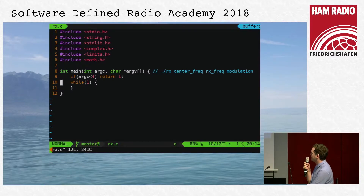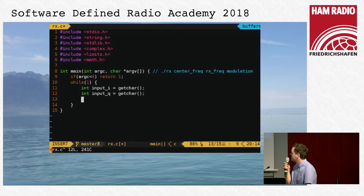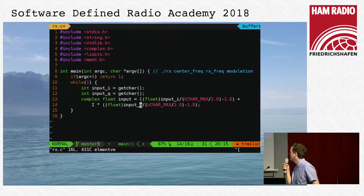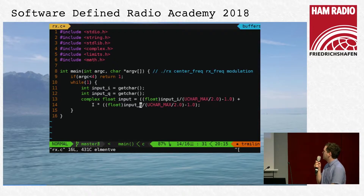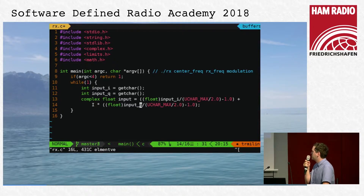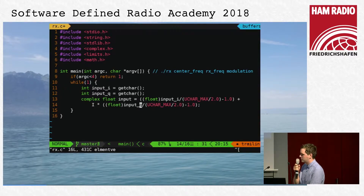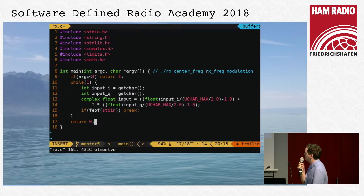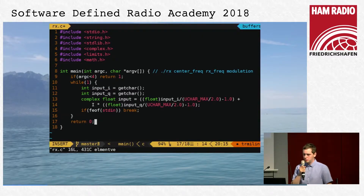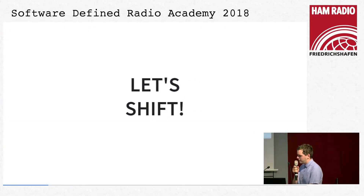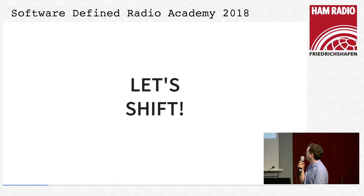Let's read that input from the RTL-SDR. We read the two bytes from the standard input and convert them to complex float, which is available in the C99 standard. And we will exit the program if the RTL-SDR tool exits.